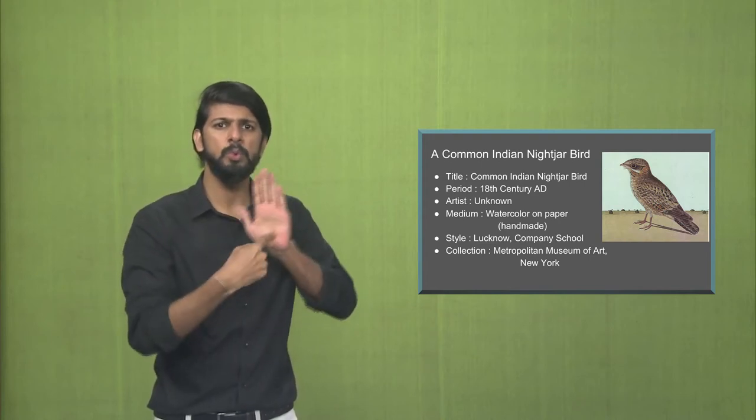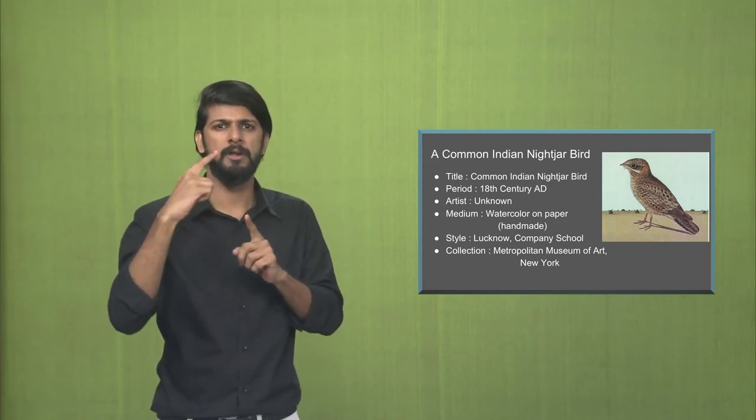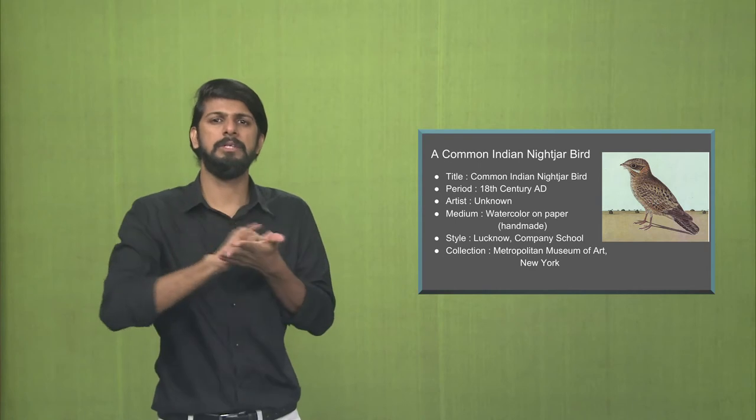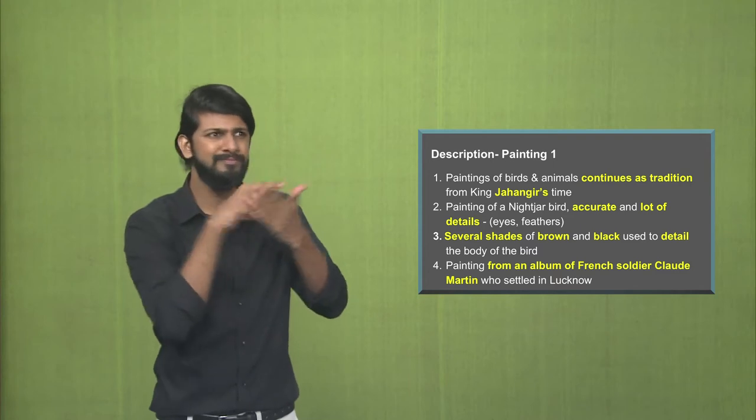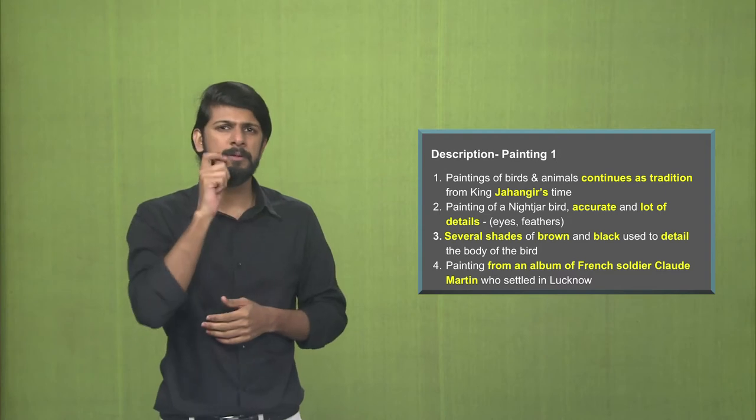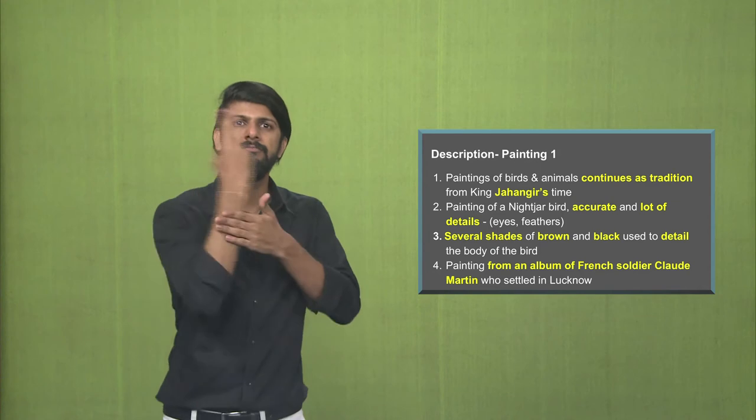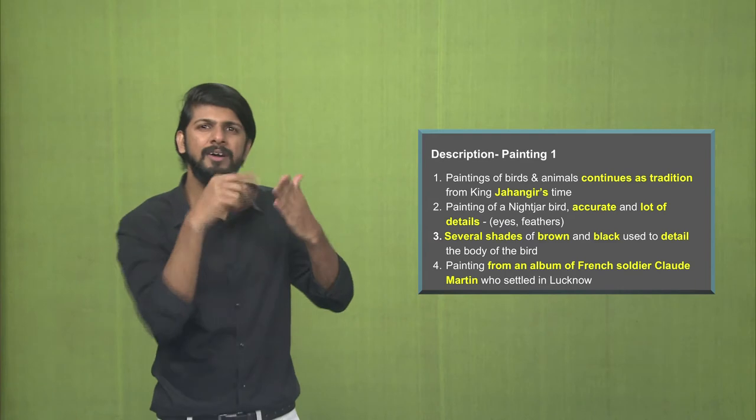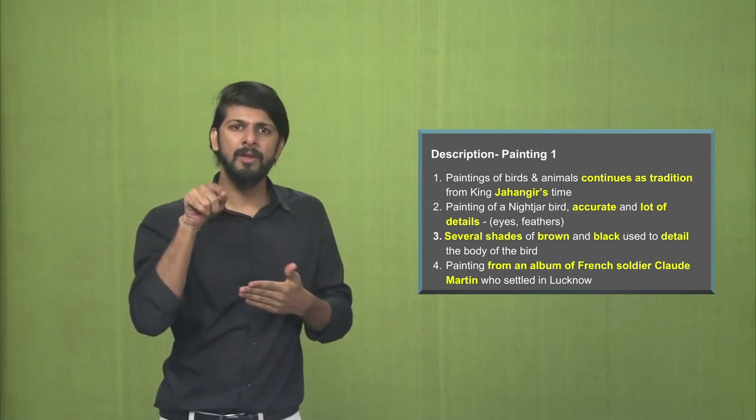And this painting is now displayed at the Metropolitan Museum of Art, which is in New York. Let us understand about this painting. The paintings of birds and animals continues as tradition from King Jahangir's time. As you remember King Jahangir was a nature lover and this tradition has continued. That is what we see in this painting.